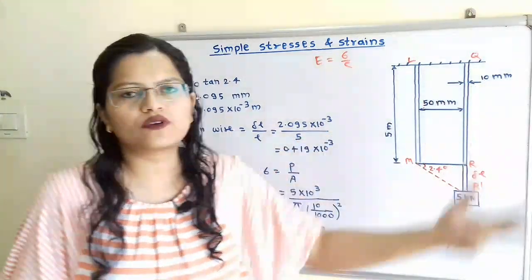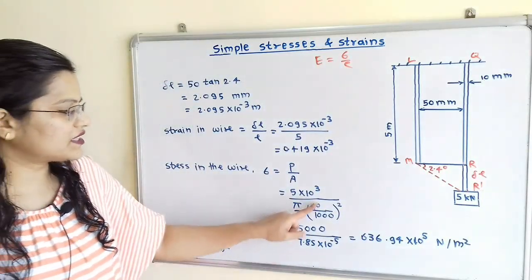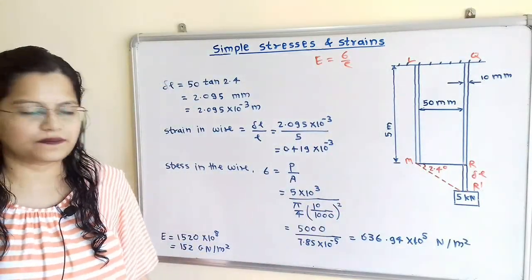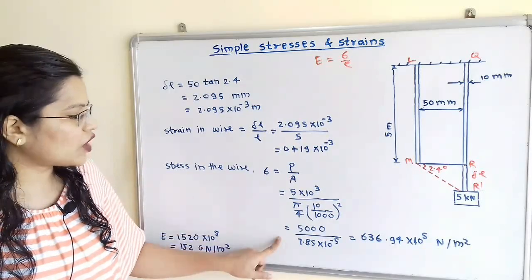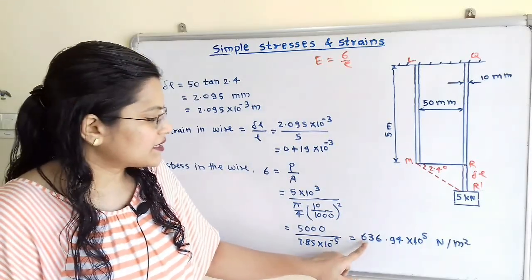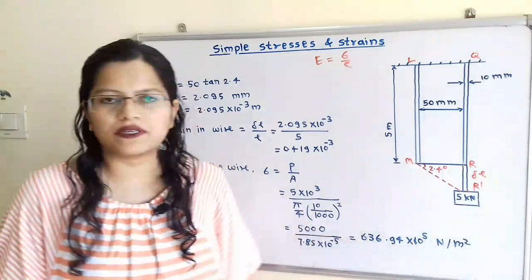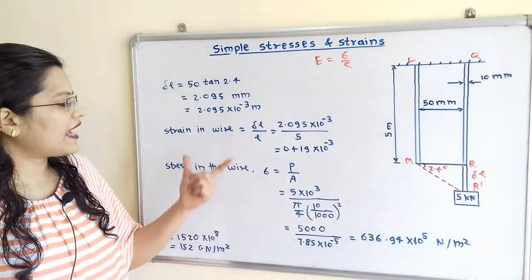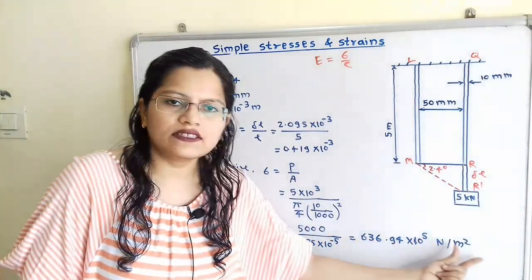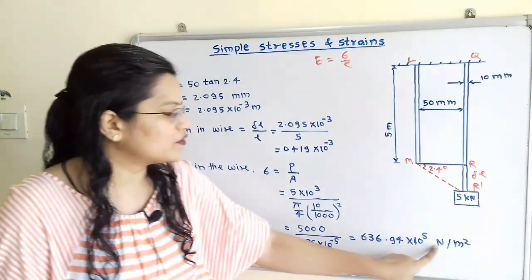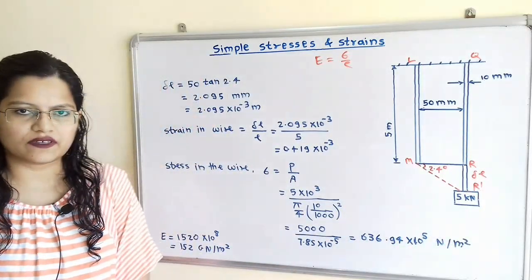Now this mm we have to convert it into meter, that is 10 by 1000 squared. So when we solve this, we will get 636.94 into 10 raised to 5 N per meter squared. So remember, we have to take this stress in standard unit. So standard unit is N per meter squared.